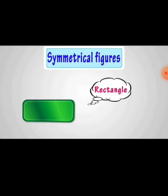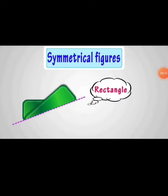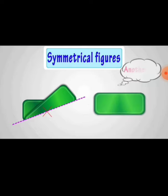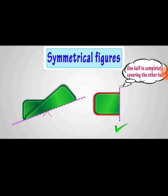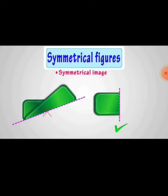Observe the rectangle. The rectangle is divided by a line of symmetry, but it is not a symmetrical figure because one half does not cover the other half. Now try this triangle another way using a dotted line called line of symmetry. One half is completely covering the other half, so this shape is called a symmetrical image or symmetrical figure.